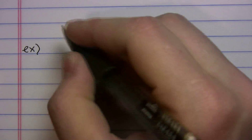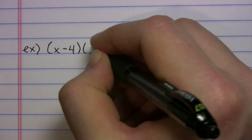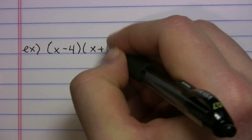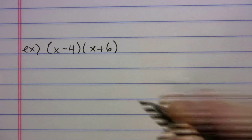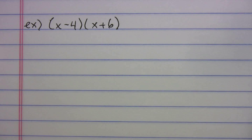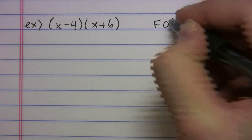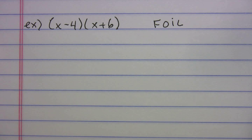Let's do one with a negative: (x − 4)(x + 6). I'll move that up and write FOIL on the side just to keep it fresh in our memory. You can pause the video if you want, try it on your own, and come back to see if you got the right answer.